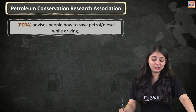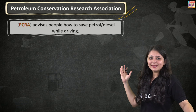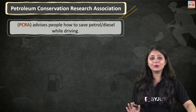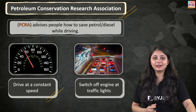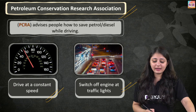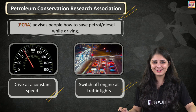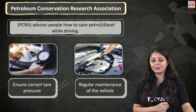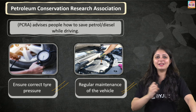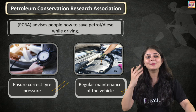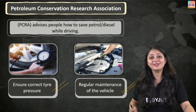In India, the Petroleum Conservation Research Association has certain advice we can follow. Drive at a constant speed and maintain a moderate speed. Switch off the engine at traffic lights — we can definitely do this whenever we have to wait. Ensure correct tyre pressure and regular maintenance of the vehicle. Be a very informed citizen, take charge of it, and make sure these simple, completely doable points are being followed.